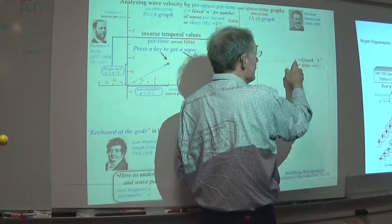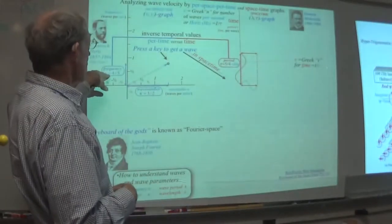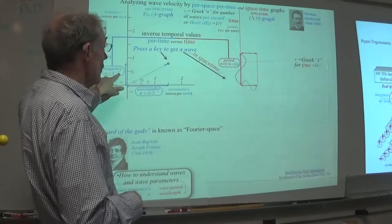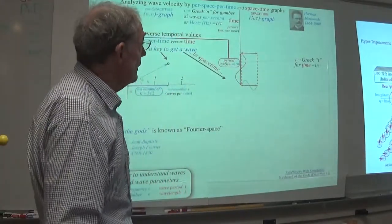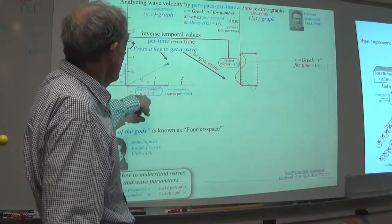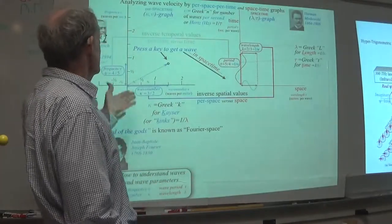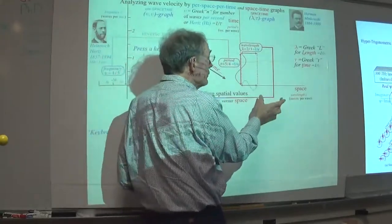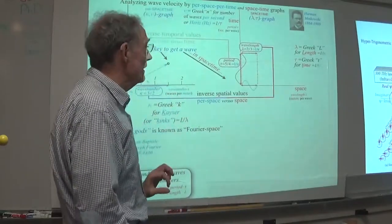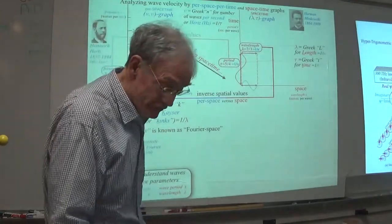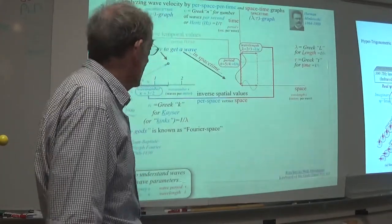This is a particular example: frequency four-fifths has a period of five-fourths - that's the inverse. And while you're doing that, you're taking a particular wave number: the number of waves per meter. So this is waves per second, this is waves per meter. That's going to produce something with a given wavelength, which is the inverse of that kappa - Greek kappa - that we use to take care of all three dimensions of space. Who thought of that? Mr. Heinrich Kaiser, born almost the same time as Heinrich Hertz, but he lived all the way to 1940.